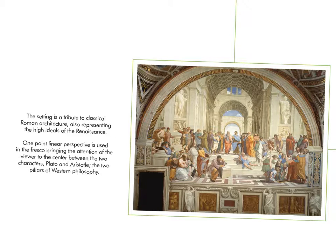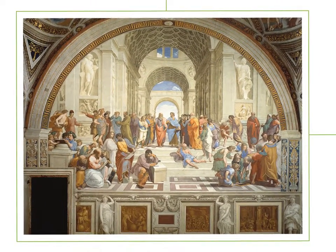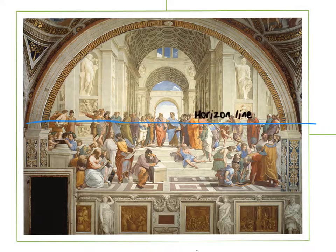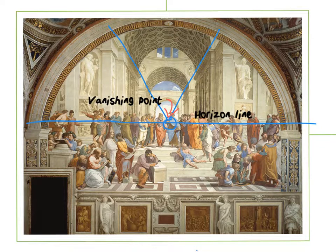For those who may not understand the concept of one-point perspective, here is a demonstration. One-point perspective is a drawing method that shows how things appear to get smaller as they get further away, converging towards a single vanishing point. The first thing you need is a horizon line. The center is the vanishing point, and these lines converge to that center area, giving the illusion of depth in a two-dimensional space.